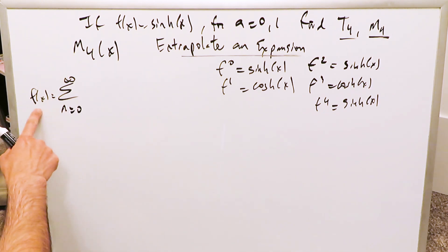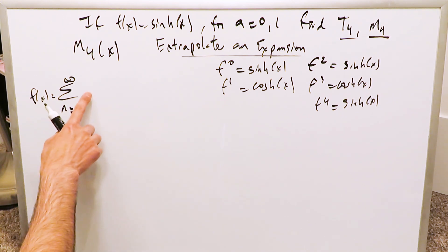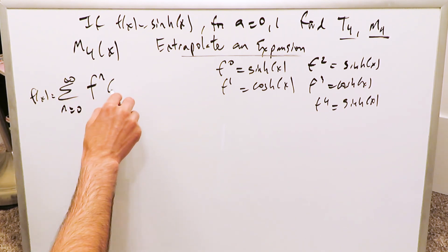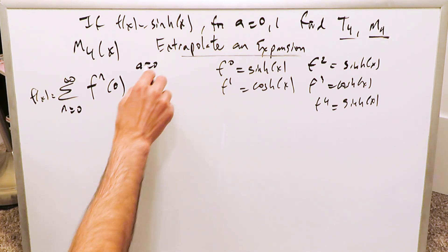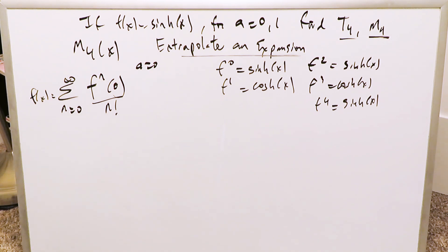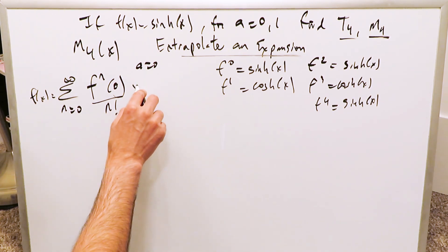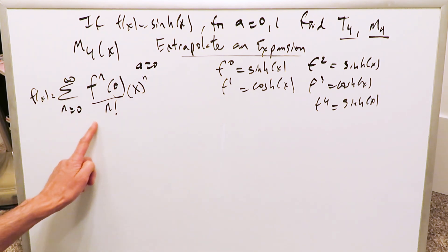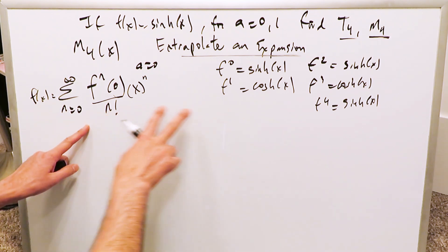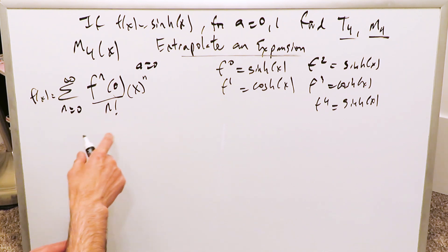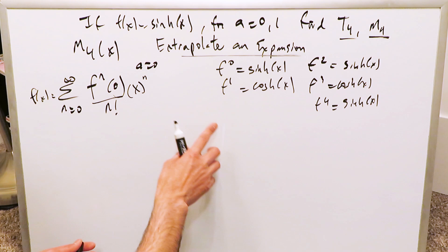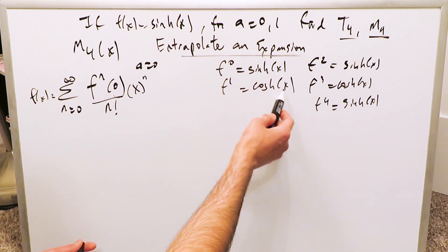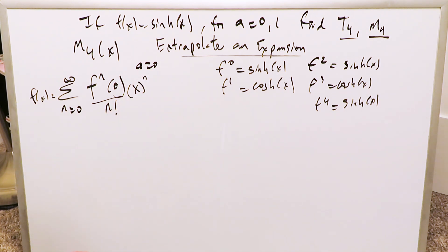The Maclaurin series format: f of x, which is your hyperbolic sine, in terms of a power series format, goes from n equals 0 up to infinity. You take the nth order derivative evaluated at the a value — in this instance a equals 0 — divided by n factorial, times x minus a to the power of n. But since a equals 0, x minus a is just x. This represents your Maclaurin series rule format. Everything which pertains to n as you go from 0 up to 4 feeds into these places.